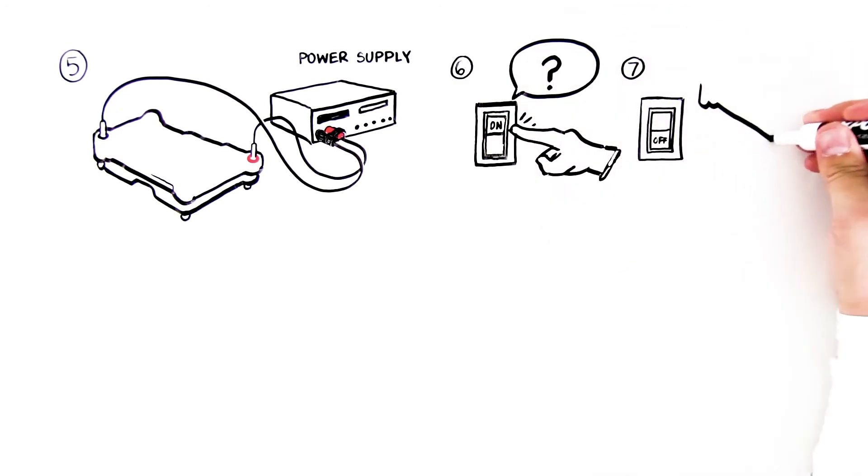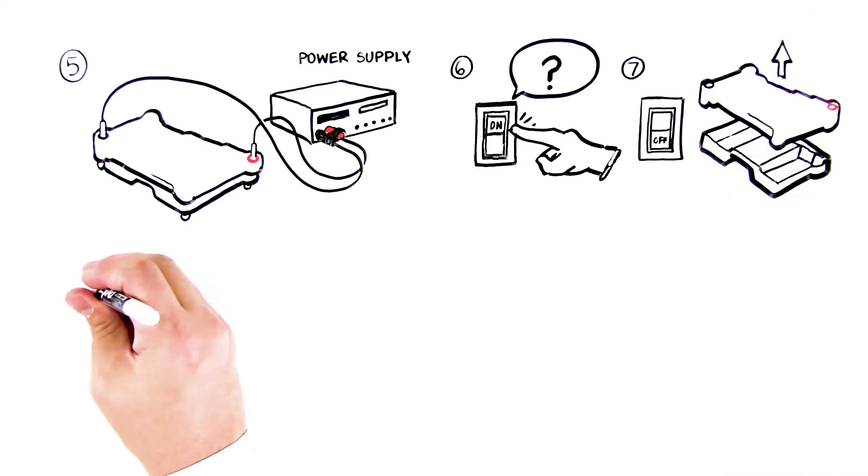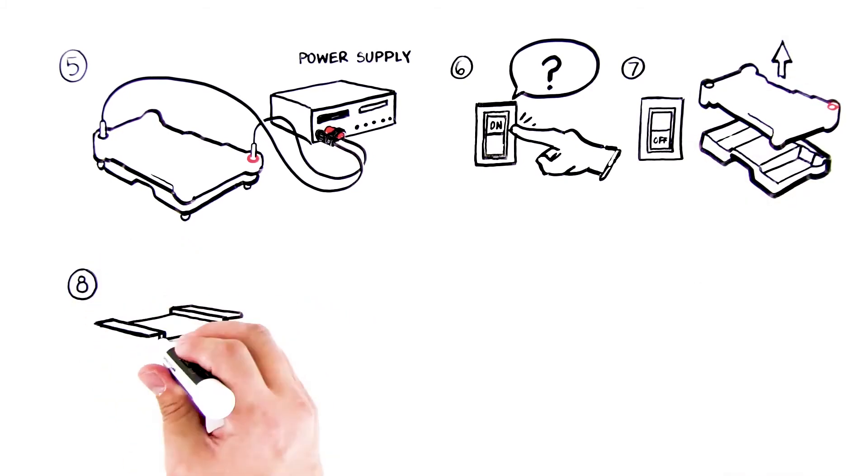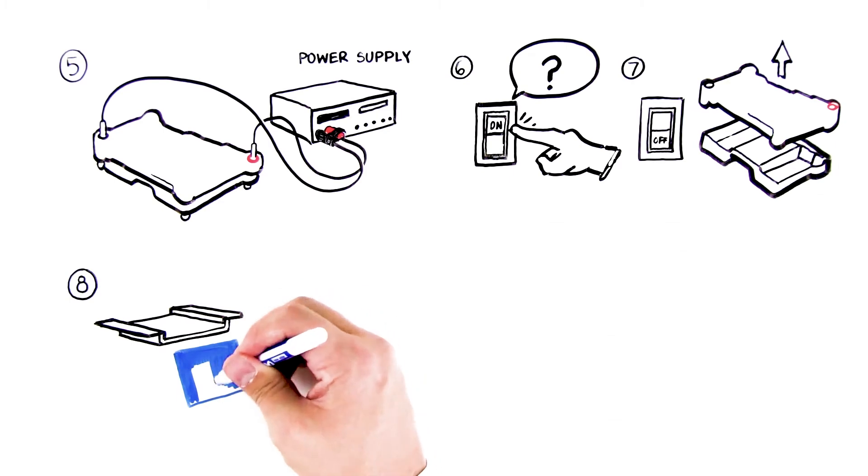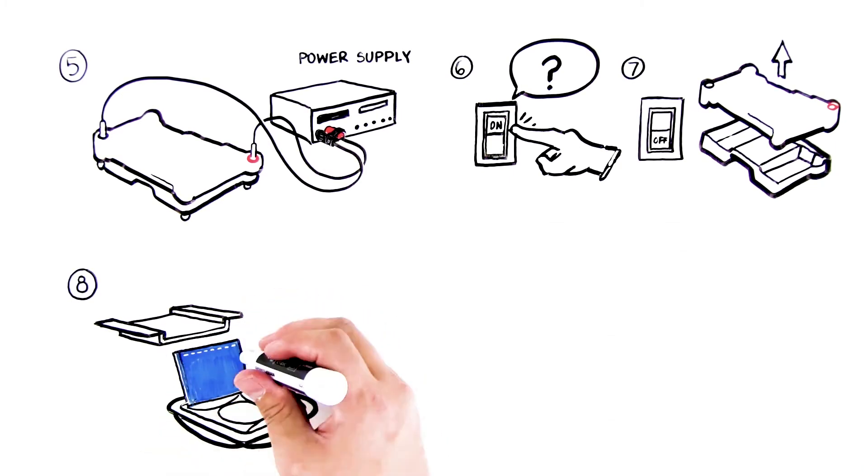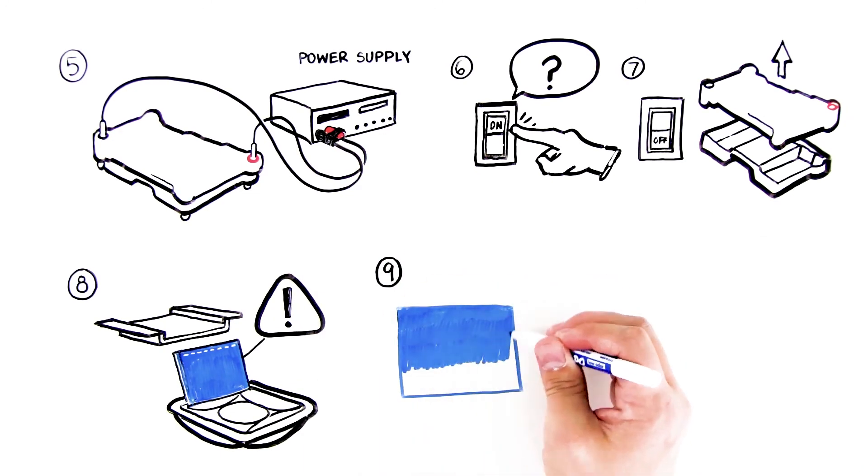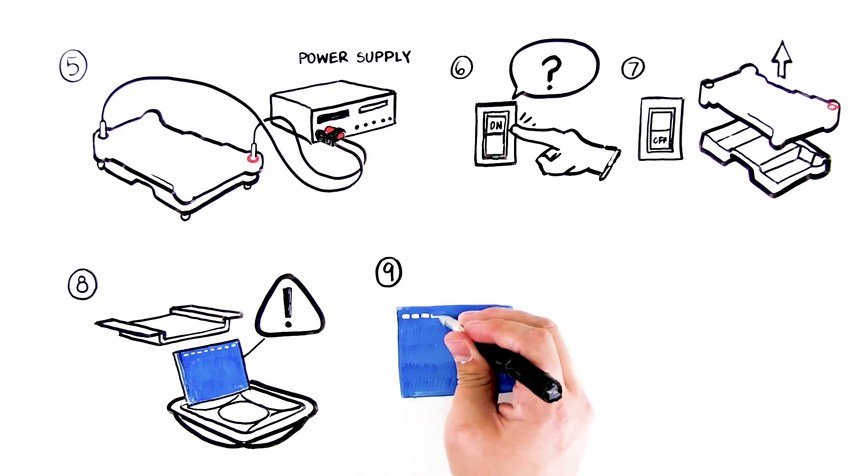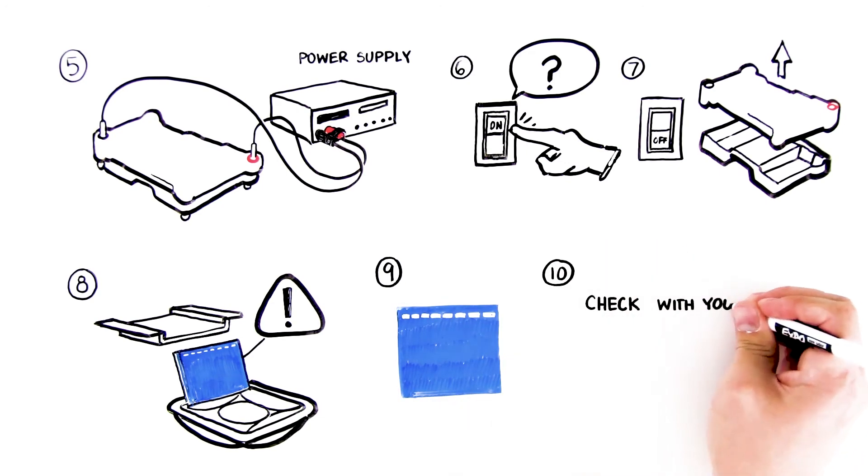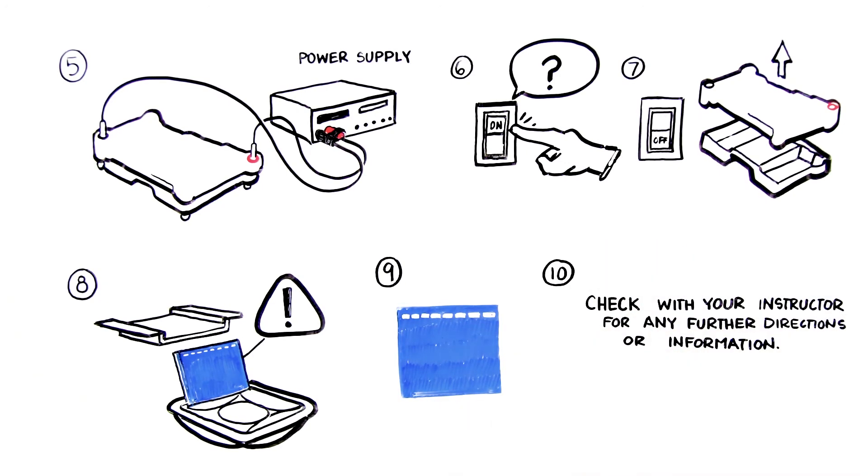When the electrophoresis is completed, turn off the power and remove the lid of the chamber. Carefully remove the gel from the electrophoresis chamber and transfer it to a gel staining tray. Be careful, the gel is very slippery. Stain and visualize your gel as directed by your instructor. Check with your instructor for any further directions or information.